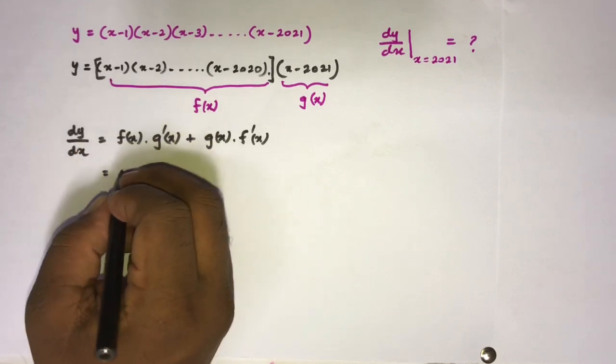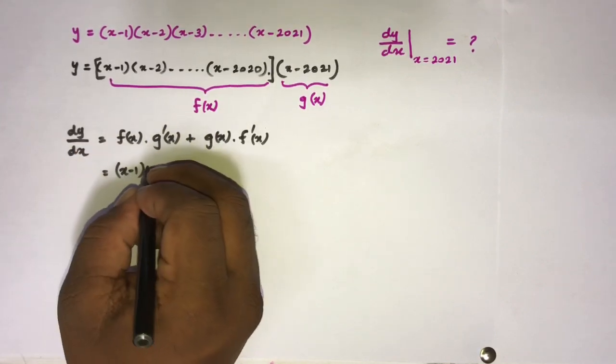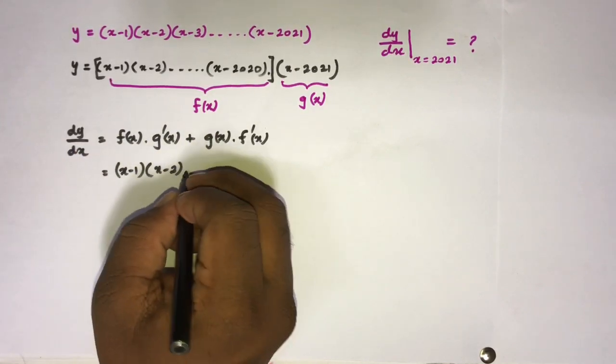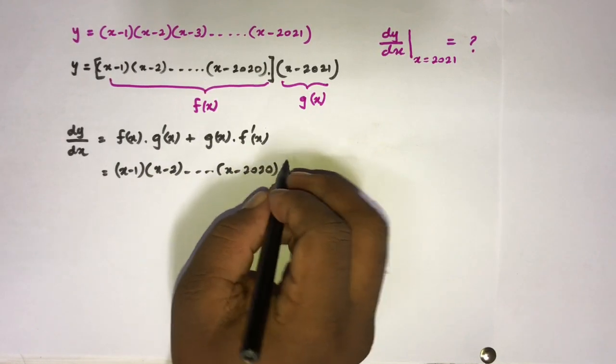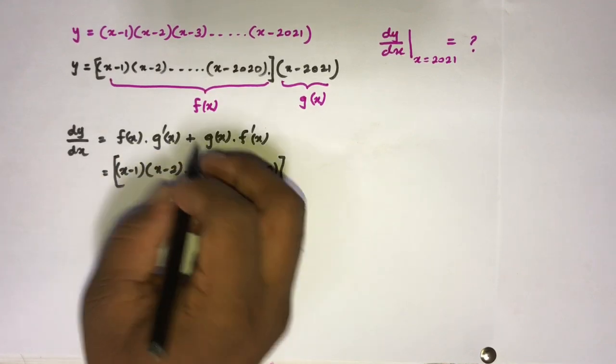We know f(x) equals (x-1)(x-2) and last term (x-2020) times g'(x).